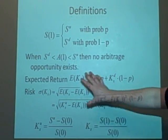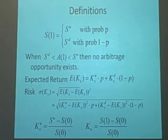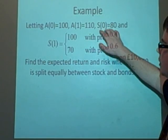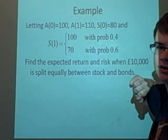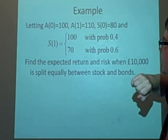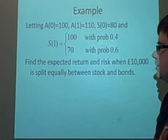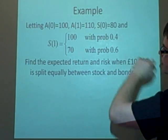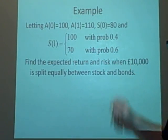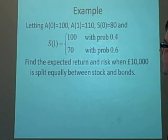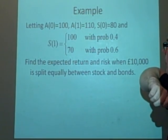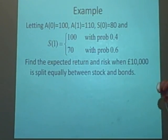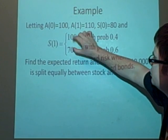So we're going to go straight into an example using some of this stuff. We've got our scenario here, we've got the bond price that starts at 100, our stock price starts at 80, and the bond price goes up to 110, and the stock price can either go from 80 to 100 with a probability of 0.4 or down to 70 with a probability of 0.6. Now we can see that this A1, this A110, is outside of it so you can get an arbitrage opportunity, but that's not what we're asking.